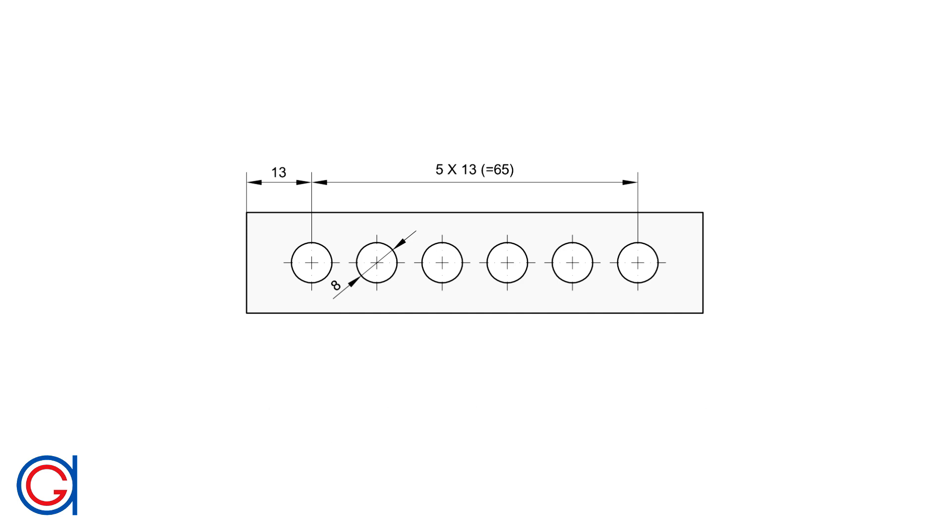Rather than dimensioning each one, we dimension the distance to the center of the first. As you can see, 5 times 13 equals 65 to show the dimension of the remaining circle centers.